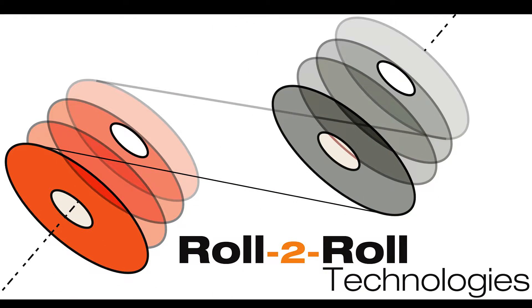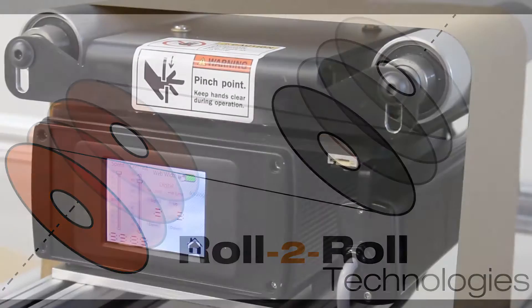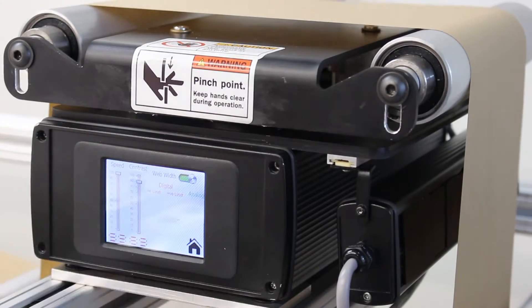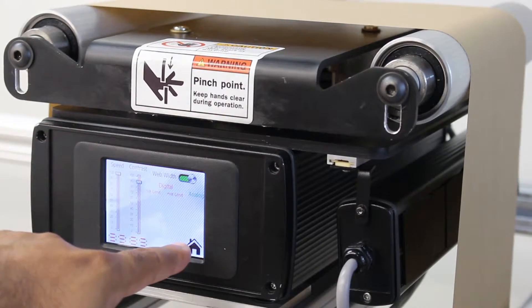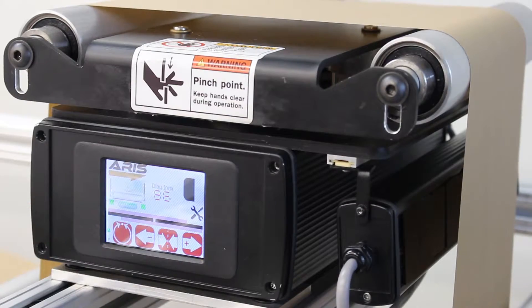Roll-to-roll Technologies adds width measurements to its ARES line of products. Absolute or relative web width can be measured based on the sensor configuration.